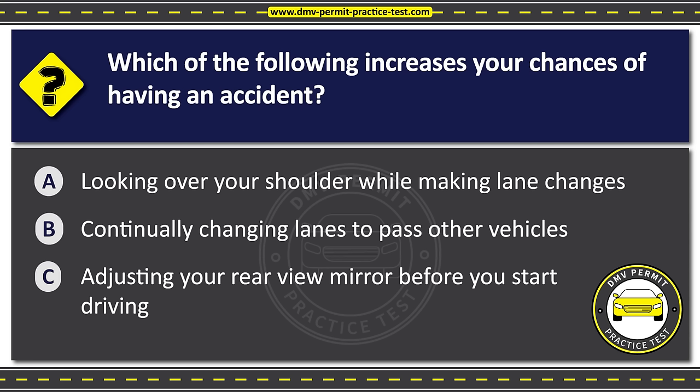Question nineteen. This sign means Option A: One lane road ahead. Option B: Merging lane ahead. Option C: Lane ends ahead. The correct answer is Option B: Merging lane ahead.